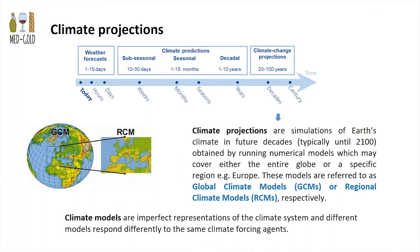We are now moving to a different timescale: climate change projections — climate simulations that extend to future decades, typically until 2100. These simulations are obtained by running numerical models. The numerical models either cover the entire globe — called global climate models — or they cover a region, called regional climate models. Regional climate models are more accurate because they have a finer spatial resolution, but they need to obtain input from global climate models — the initial and boundary conditions — in order to be run.